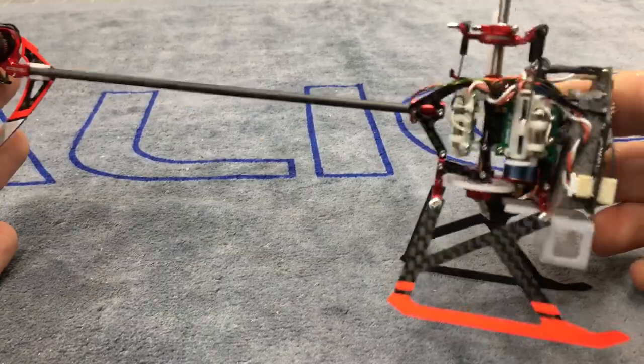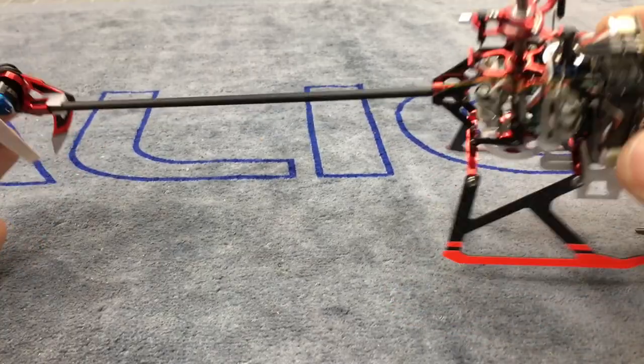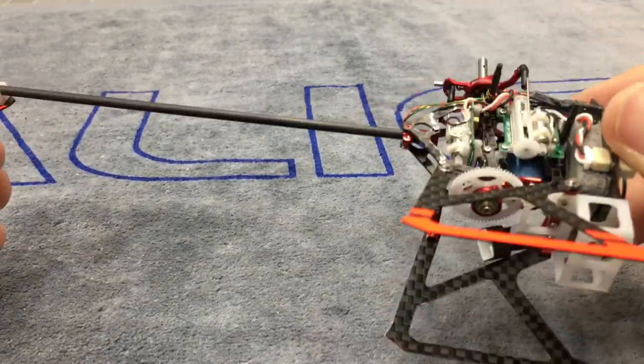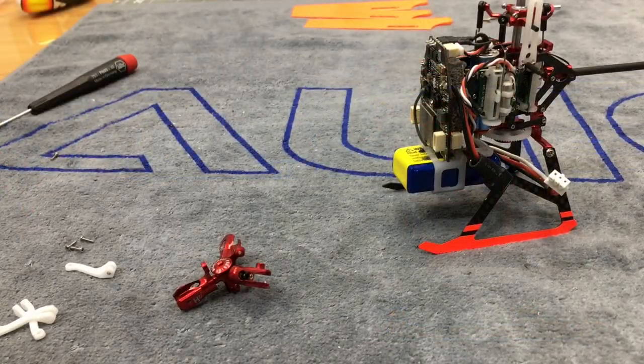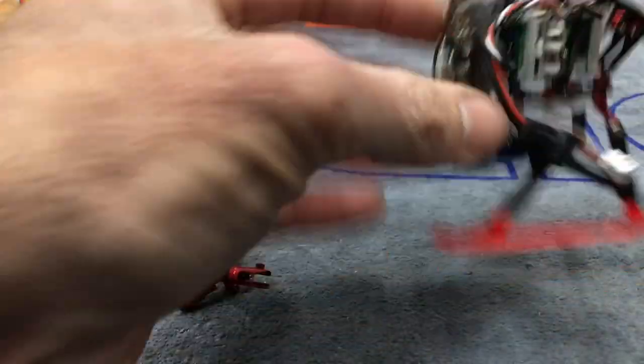So we went ahead. We leveled the swash plate. Everything is working like it should. So now let's get the head mounted.